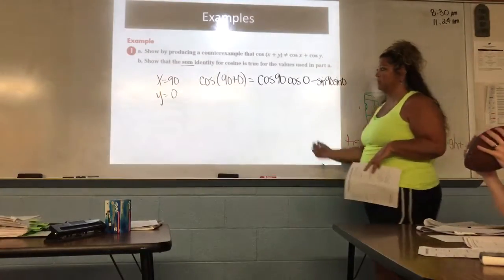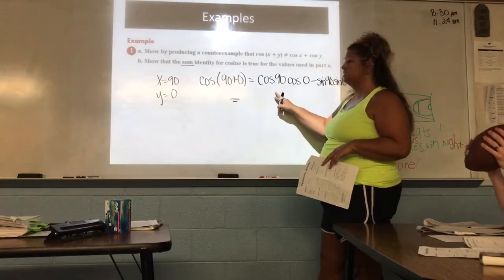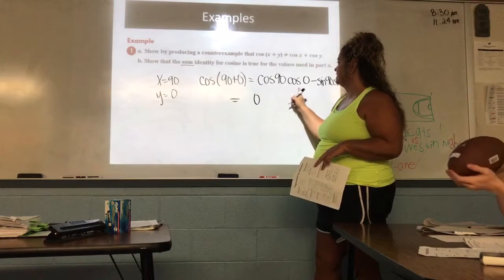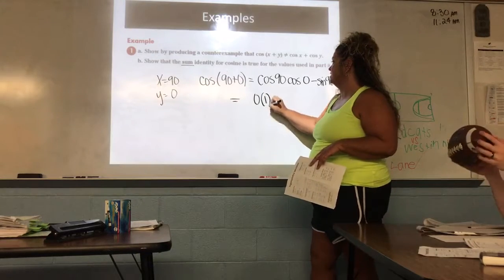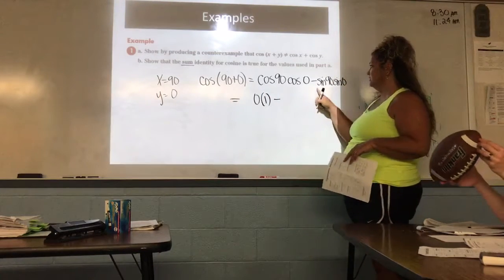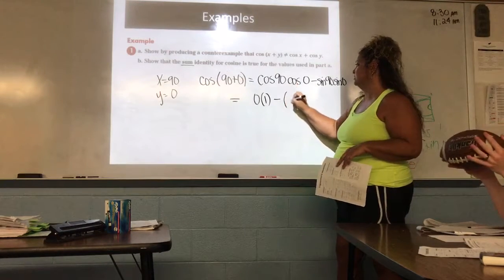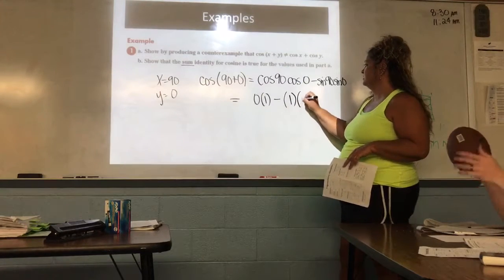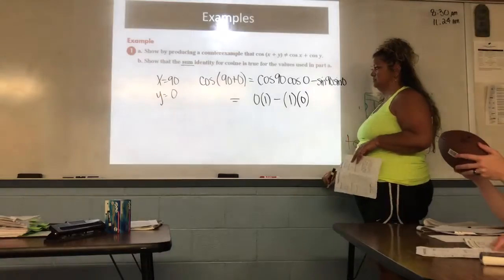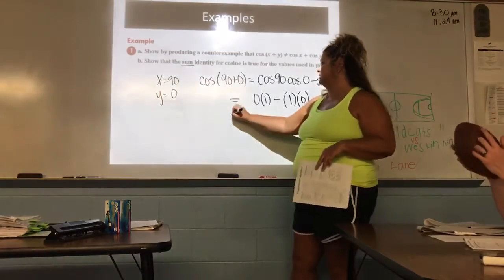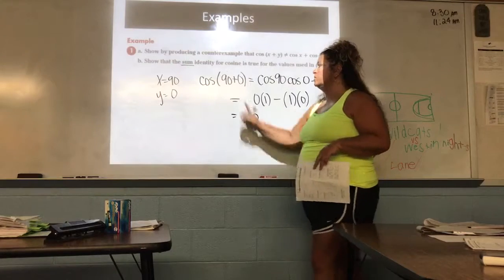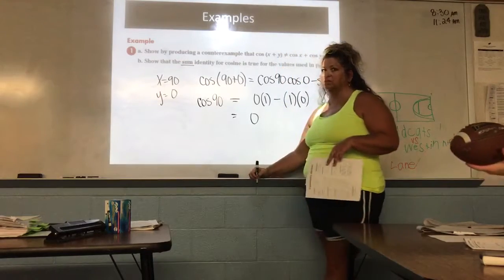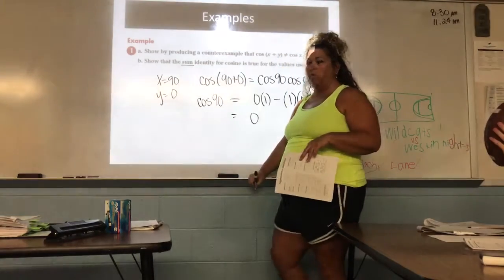Does everybody understand why if it's a plus here, it's a minus here? Because they're both on top. They're both on top in the identity. So then from here, that's when we're going to go ahead and start simplifying. We said cosine of 90 was what? Zero. And cosine of zero was? One. Minus sine of 90 is? One. And sine of zero is? Zero.